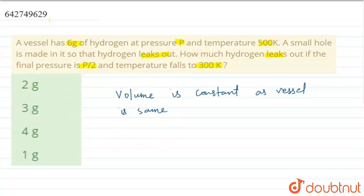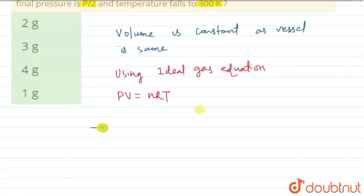Now we need to use the ideal gas equation: PV = nRT. Since the volume is constant, we can write n1RT1/P1 = n2RT2/P2.